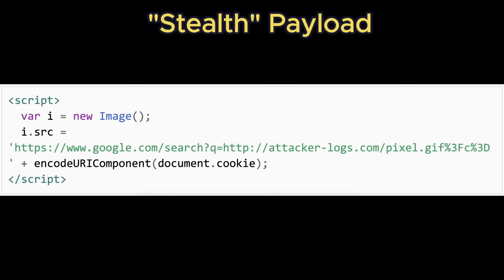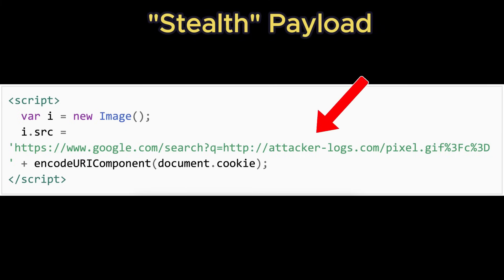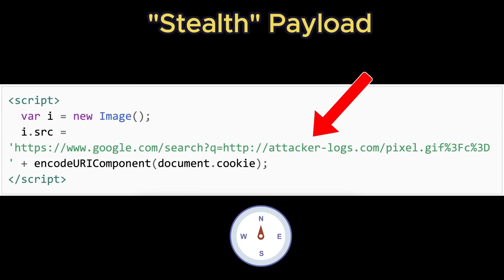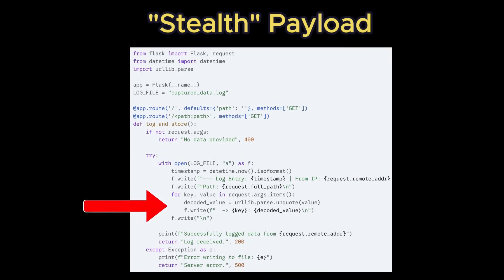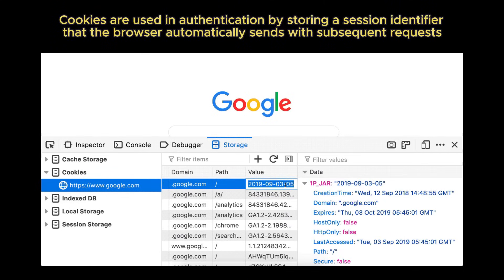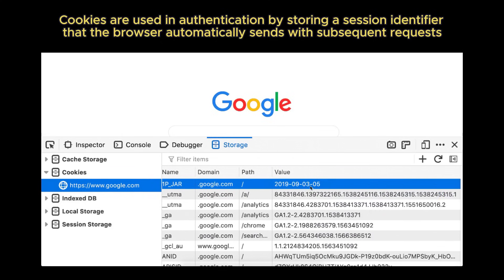The second payload is the stealth payload, or asynchronous exfiltration. This method is objectively far superior, more modern, and virtually invisible to the victim. It exfiltrates data in the background without any page navigation. The script creates a new image object in the browser's memory and sets the source attribute to the attacker's server URL. The browser, thinking it's just fetching a harmless tracking pixel or pixel.gif, dutifully sends a GET request to load the image. The browser itself doesn't navigate, the page does not reload, and the user sees nothing. The attacker's server doesn't even need to possess a file named pixel.gif — it simply logs the incoming request, which contains the victim's complete, encoded cookie data appended as a query string. This is the exact same technique used by legitimate analytics and ad tracking networks. In both cases, the attacker now has the victim's cookie, loads their own browser, uses dev tools to inject the stolen cookie into the browser's storage for the vulnerable site, refreshes the page, and is now fully logged in as the victim.